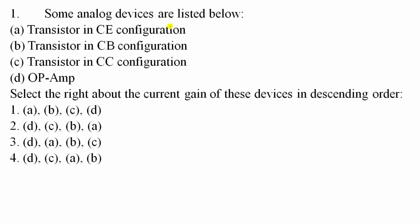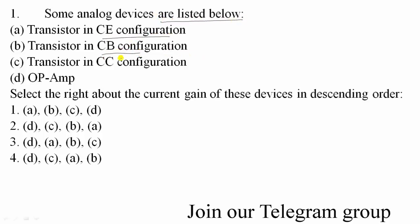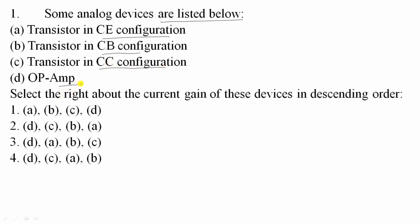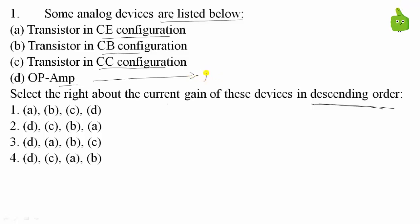Question number one: some analog devices are listed — transistors in common emitter configuration, common base configuration, common collector configuration, and operational amplifier μA741. You have to arrange the current gain of these devices in descending order. For the op-amp, the input current is approximately zero, but output current is finite, giving a current gain in the order of 10 to the power 6.